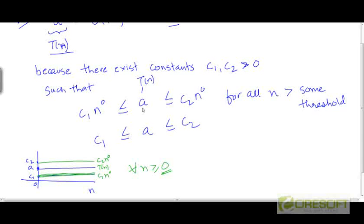this is going to hold. If we choose c1 to be some number between a and 0, let's say we choose c1 to be a by 2, and we can choose c2 to be either a plus 1 or let's say twice of a.